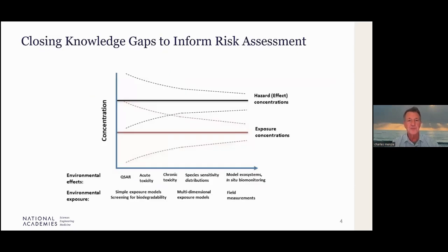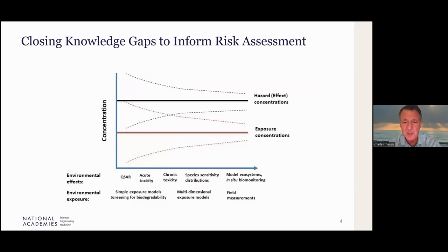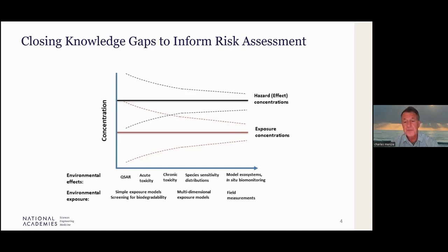Many of you are familiar with the idea of bringing information together at various levels. With regard to effects, what this diagram shows is on the far left, beginning with simpler tests such as QSARs and extending all the way to the right with model ecosystems and in-situ biomonitoring, where effects information might be gathered. The notion is that at each stage you learn something more and reduce the uncertainty about understanding effects and exposures. Often this approach is put into a tiered system where you do simpler tests first and then may progress. This is the committee's thinking on how to bring together appropriate toxicity information for addressing the risk questions at hand.